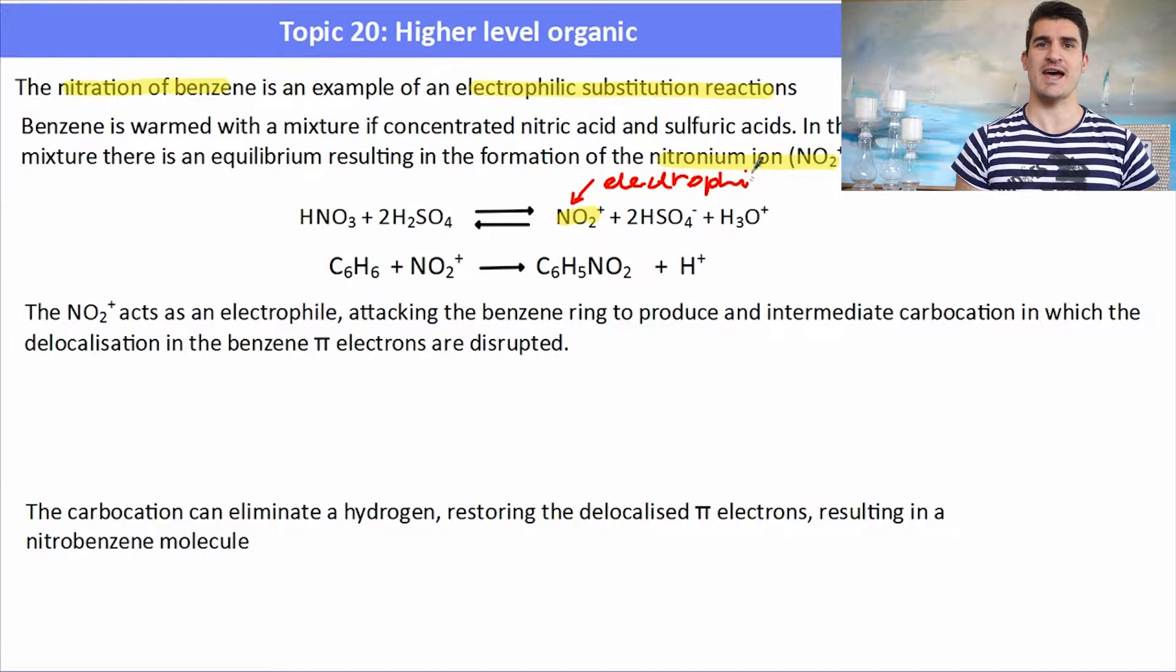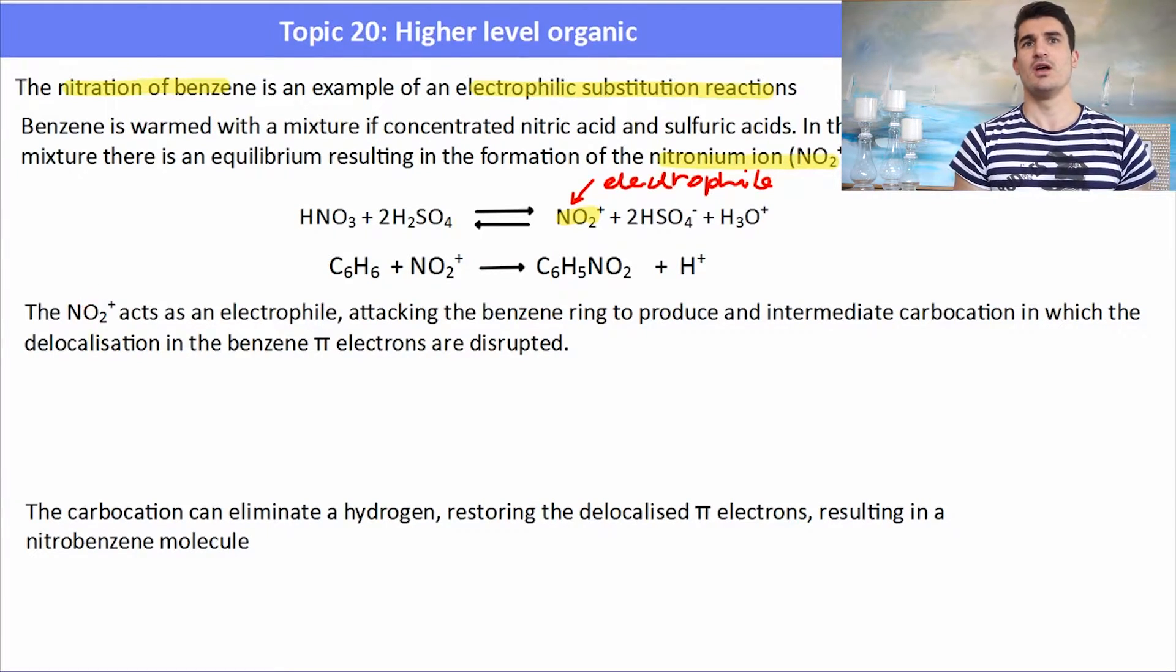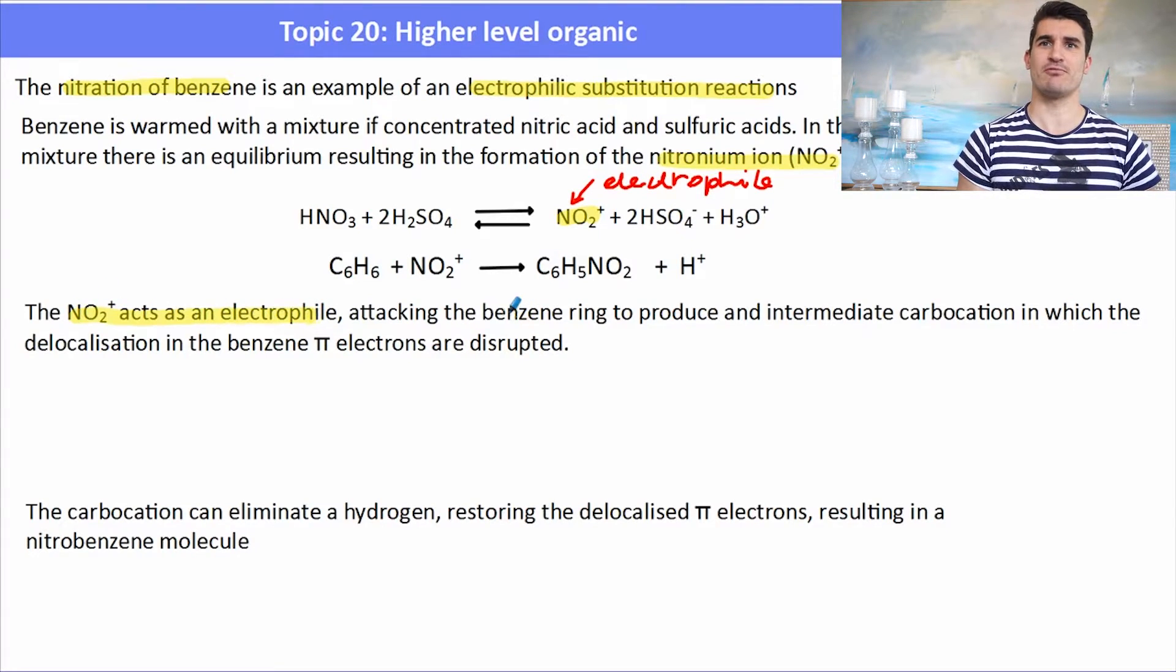It has a positive charge, it's electron deficient, so it's known as an electrophile. That electrophile is able to attack that high electron density of the benzene ring. The NO2+ acts as an electrophile attacking that benzene ring to produce a carbocation intermediate where the delocalization in the benzene pi electrons is disrupted.